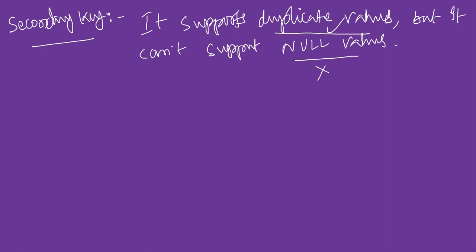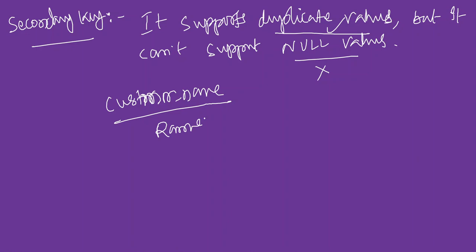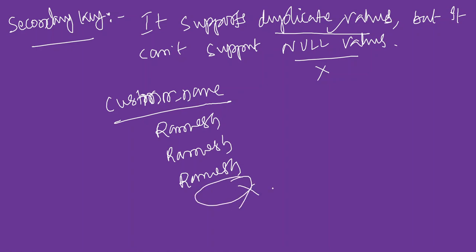For example, consider a customer name field. Customer name can repeat — for example, Ramesh, Ramesh, Ramesh can appear for different customers. So this type of implementation is called secondary key: it supports duplicate values but cannot support null values.